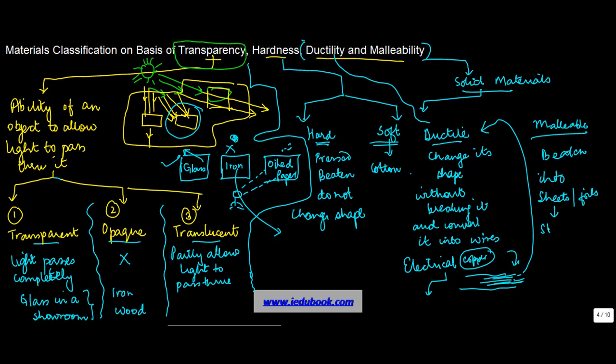When you see stainless steel sheets or iron sheets which are used to keep at the top of houses, especially in places where you have lots of rain, these are examples of malleable materials.